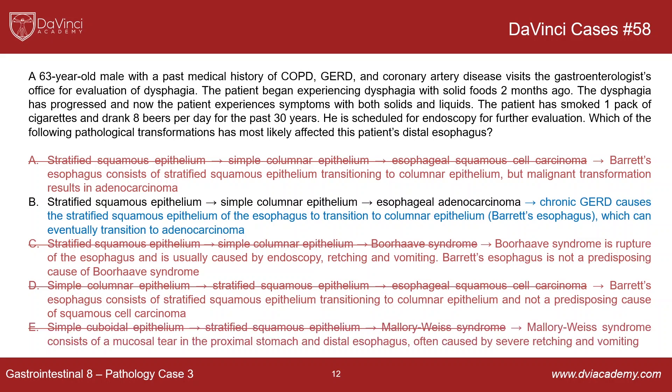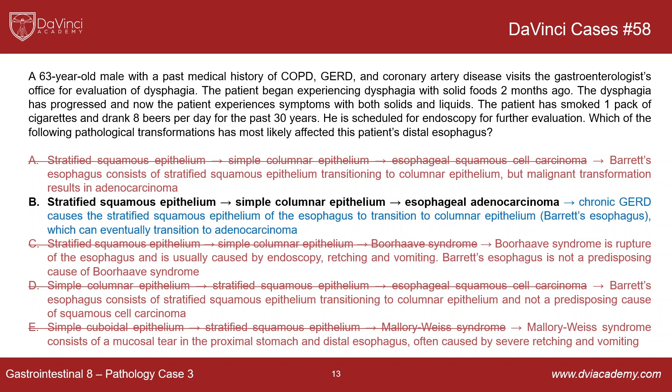The last choice mentions simple cuboidal epithelium, which isn't right because the esophagus is stratified squamous. And Mallory-Weiss syndrome, just to review, consists of a mucosal tear in the proximal stomach and distal esophagus, often caused by severe retching and vomiting. So what we have here is a patient with classic risk factors — GERD, smoking, alcohol use — for esophageal cancer. What has most likely happened is the native stratified squamous epithelium of the esophagus has transitioned to simple columnar epithelium (Barrett's esophagus), pushing the patient at risk of transitioning to esophageal adenocarcinoma.